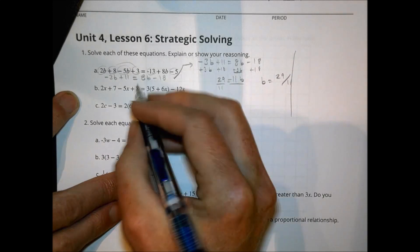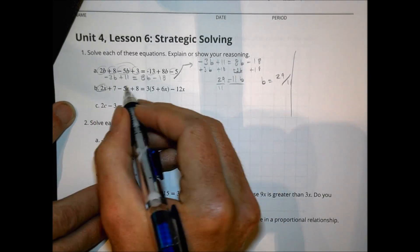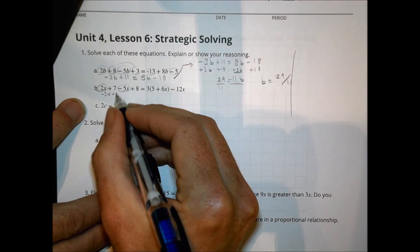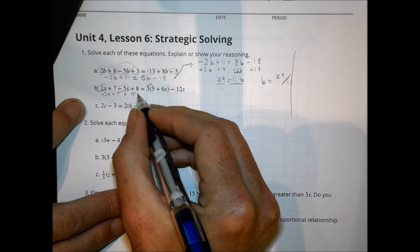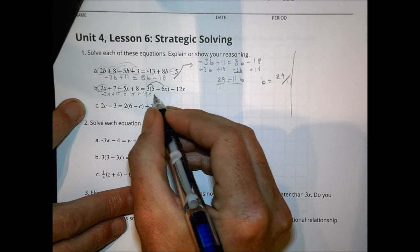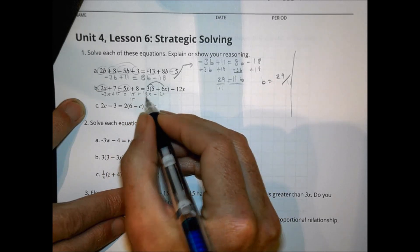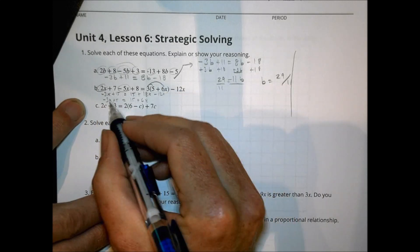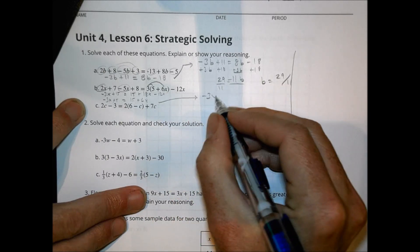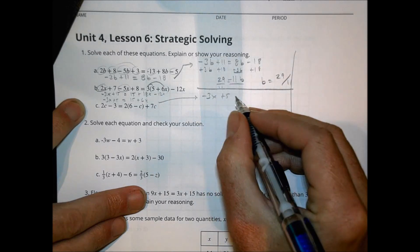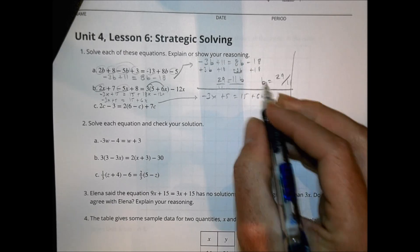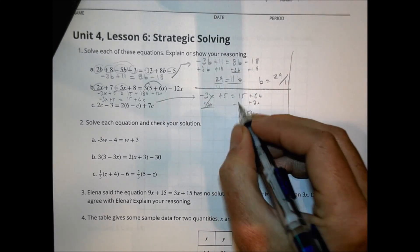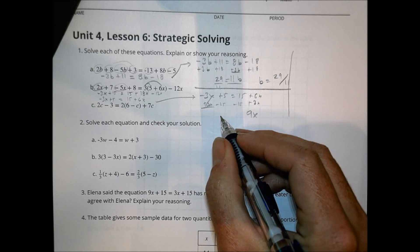Alright, let's take a look at letter B. We have 2X and we have a 2X and a negative 5X. That's going to be a total of a negative 3X plus 7 and 8 makes 15 equals, distribute here, that's a 15 plus 18X minus 12X. Those X's combined to be a positive 6X equals negative 3X plus 15. And so if we add 3X over here, let's rewrite this one here. We have negative 3X plus 5 equals 15 plus 6X.